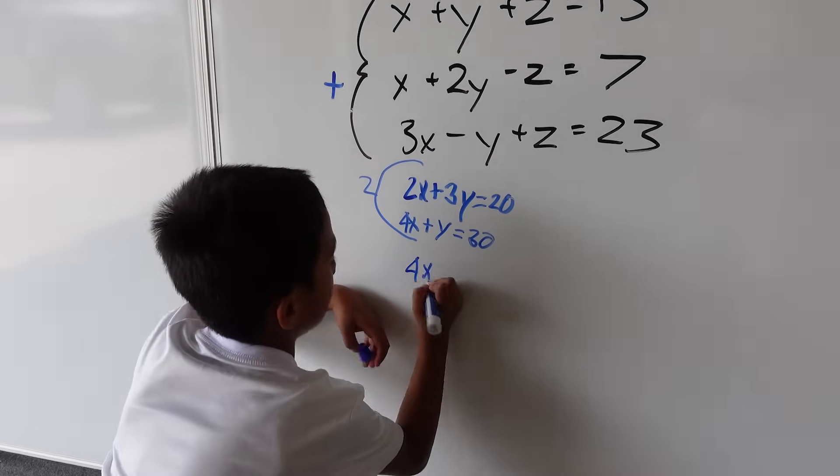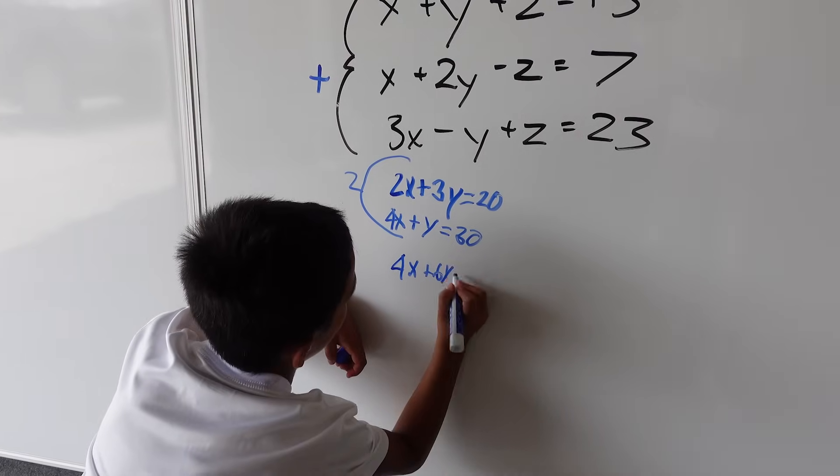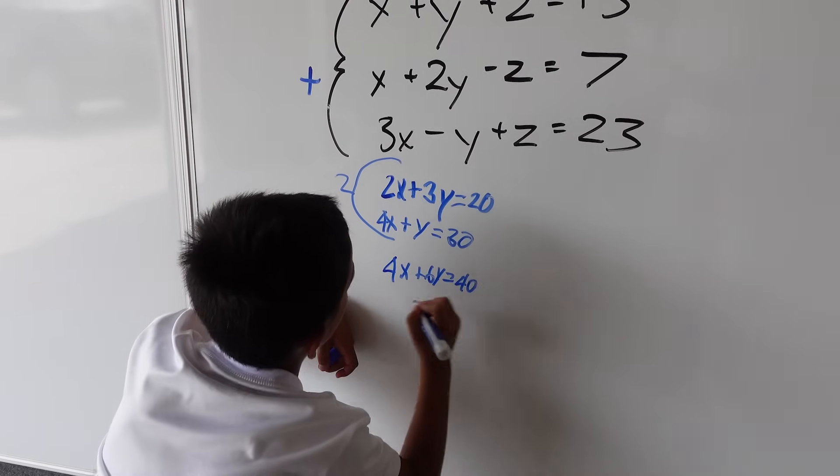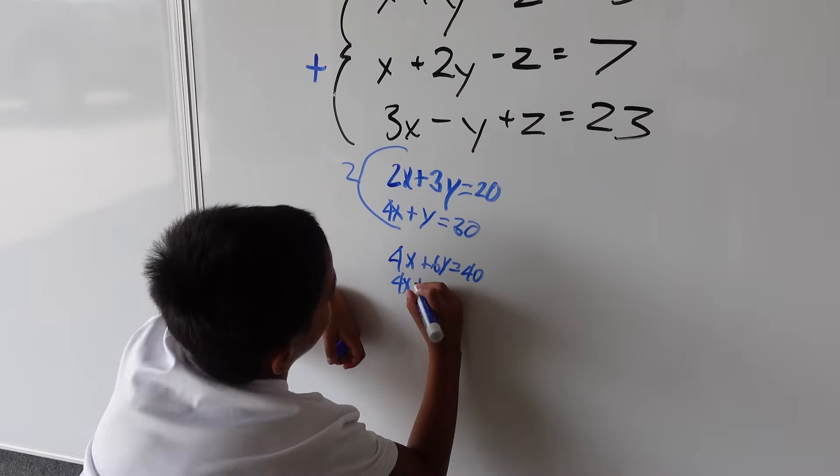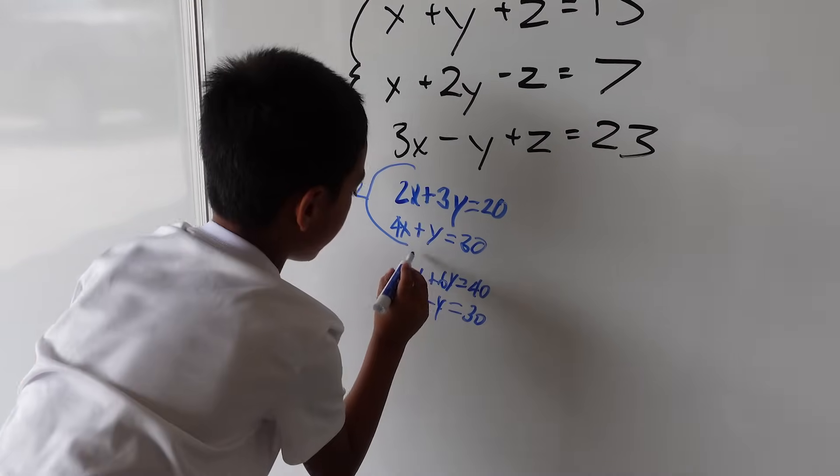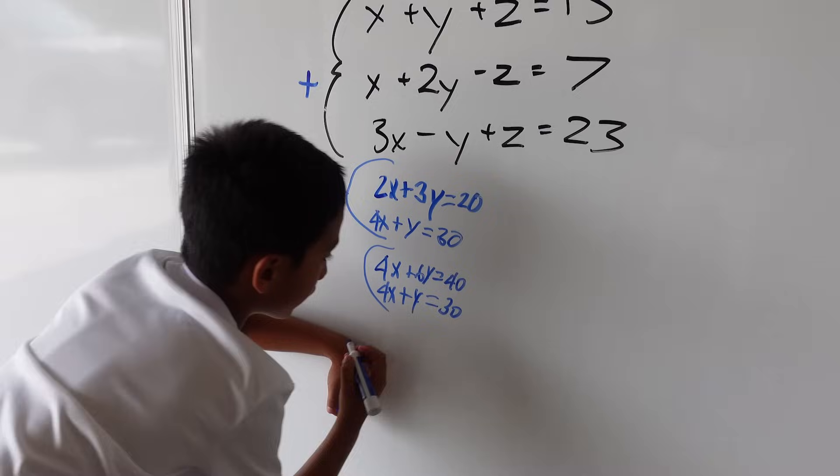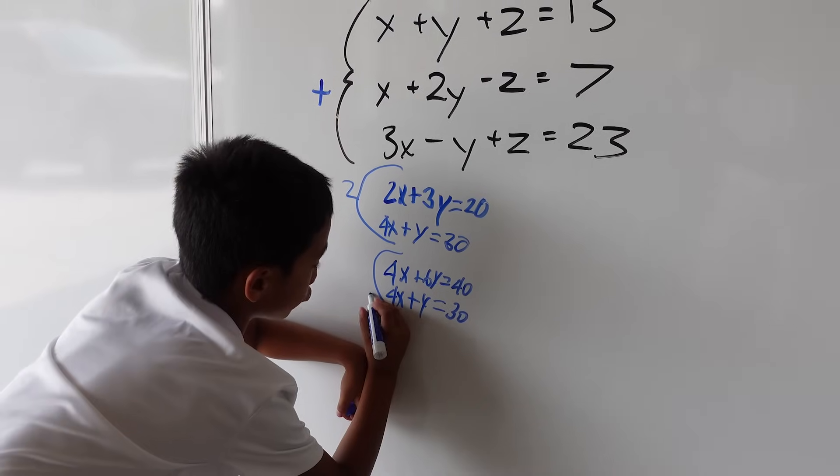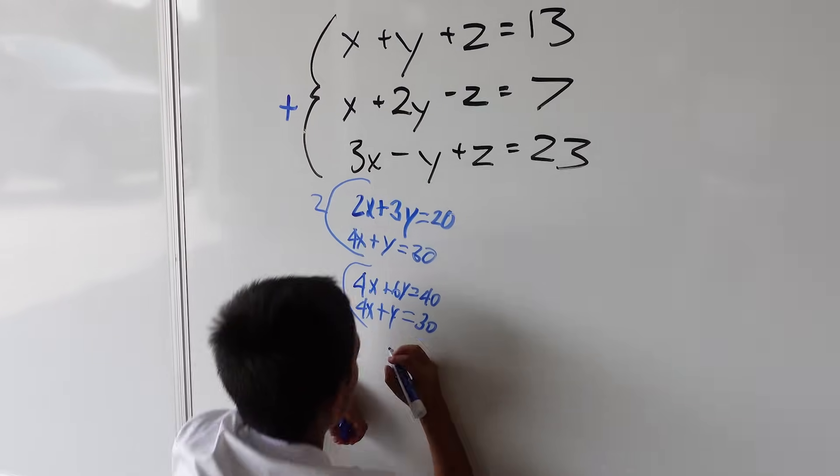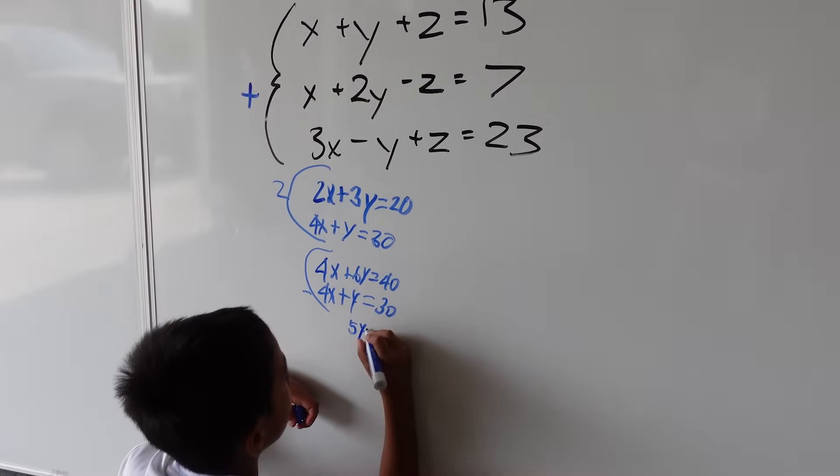So then you have 4x plus 6y equals 40, and you have 4x plus y equals 30. You do the subtraction with parentheses, and you get 5y equals 10.